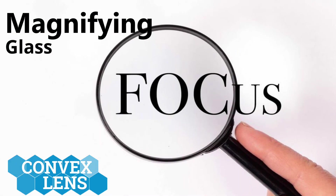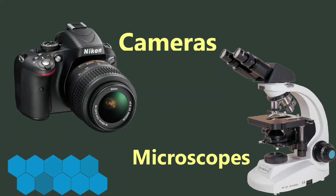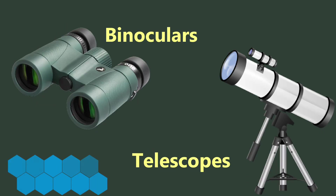Some common uses of the convex lens: because a convex lens can transmit and focus light rays to form magnified or diminished images, and real or virtual images, this type of lens is used in magnifying lenses, eyeglasses, cameras, microscopes, projectors, telescopes, and binoculars.